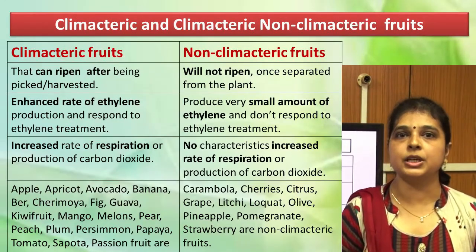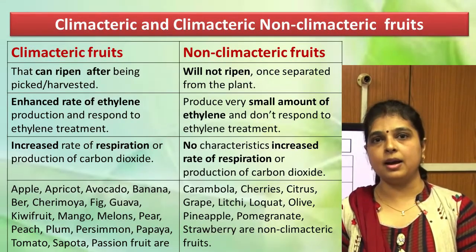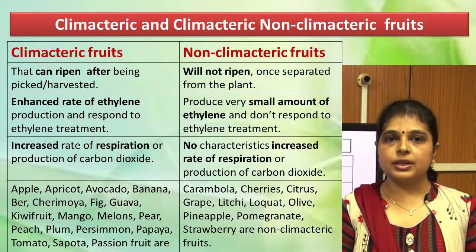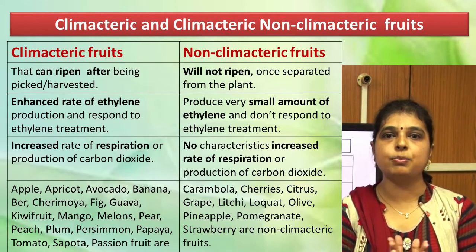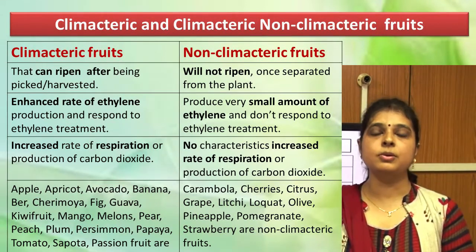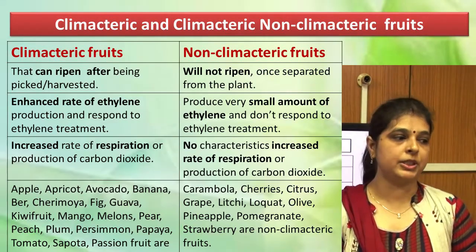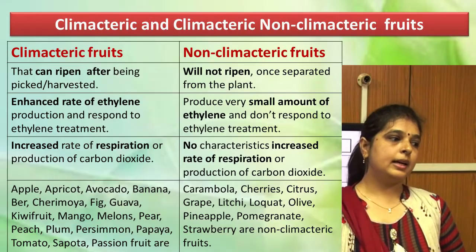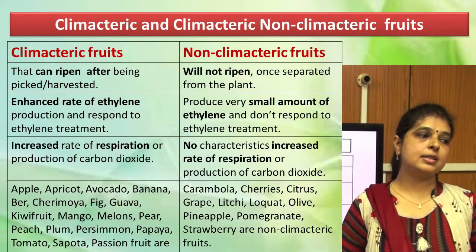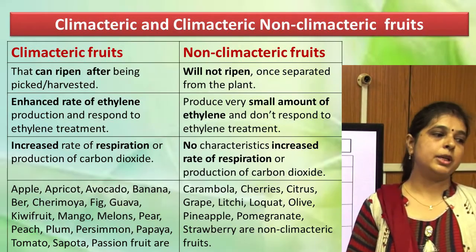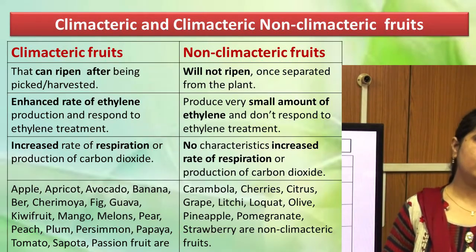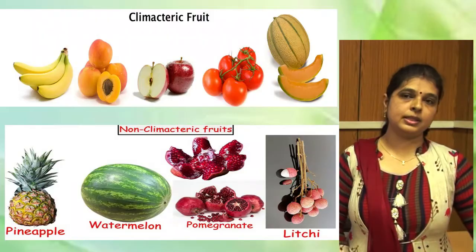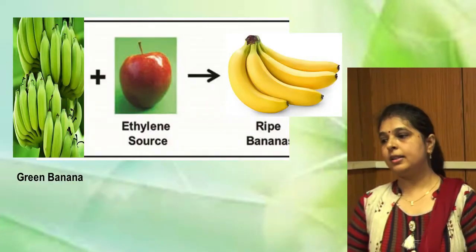In climacteric fruits there is a large burst of ethylene formation. Examples of climacteric fruits are banana, mango, apple, apricot, avocado, pear, and fig. Non-climacteric fruits include cherry, citrus, grape, lychee, olive, and pineapple. In the figure I have shown how placing unripe green banana near a ripe apple causes the banana to start ripening suddenly, due to ethylene released by the apple.